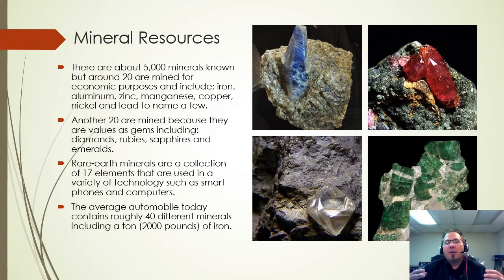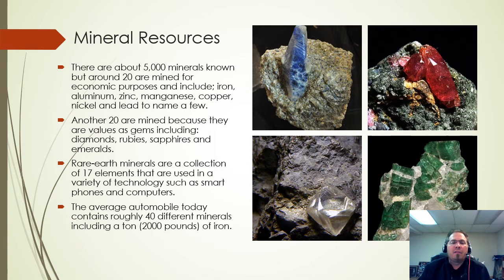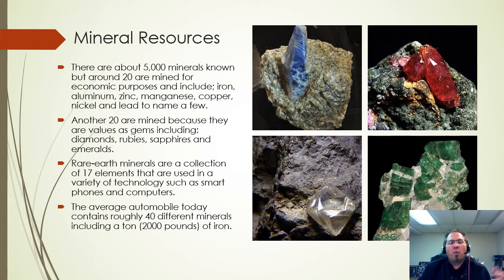There are roughly 5,000 minerals we know of, but only about 20 are mined for economic purposes, including iron, aluminum, zinc, manganese, copper, nickel, and lead. Iron is used to make steel for cars, buildings, and bridges. Zinc is used to make brass, copper goes into tubing and wiring, and nickel is used in hardening processes. There are also another 20 mined because they have value, including gems like diamonds, rubies, sapphires, and emeralds. As a side note, rubies and sapphires come from the same parent mineral called corundum — it's just the impurities in them that change the color.